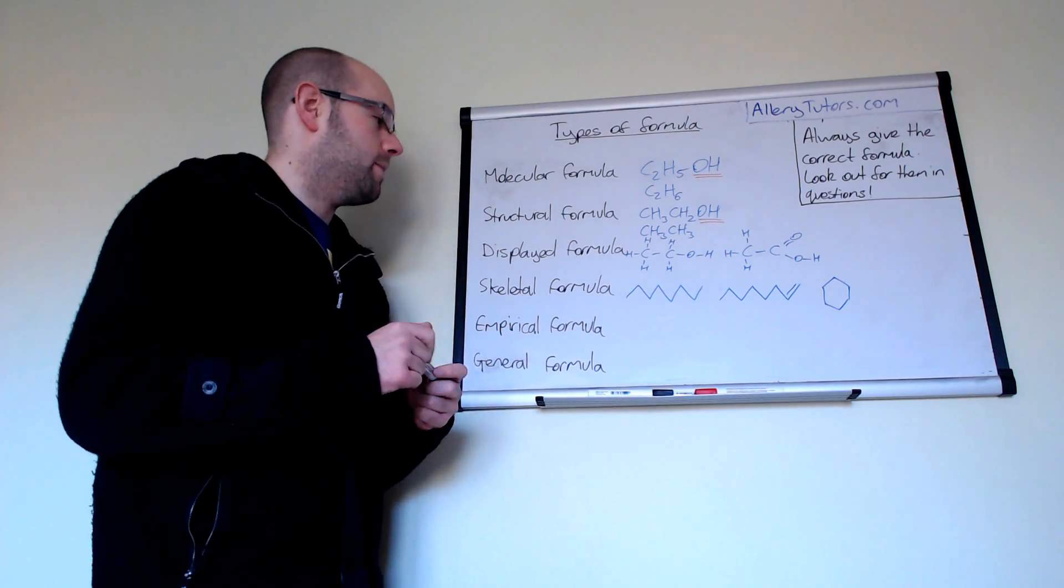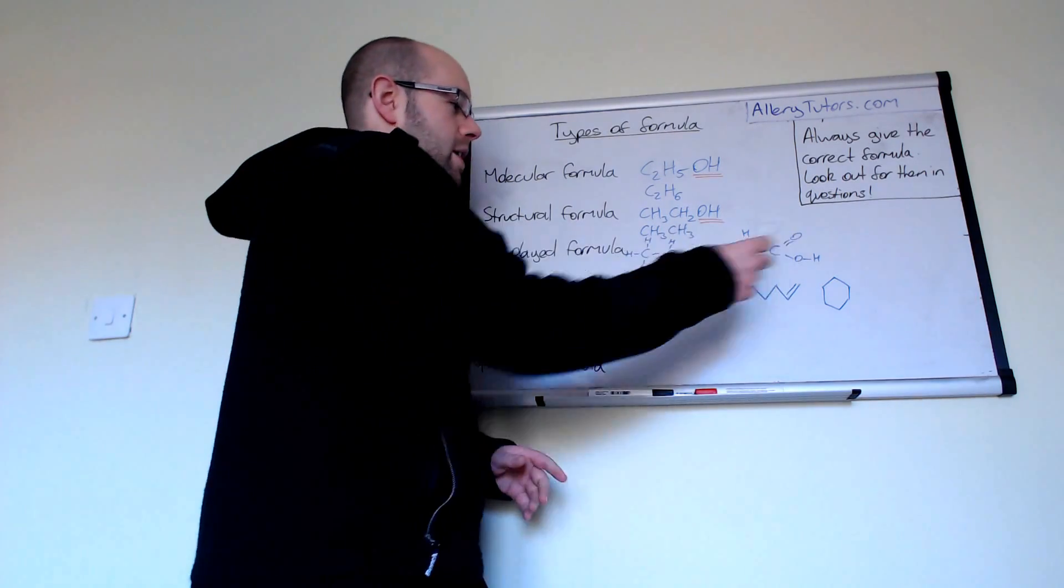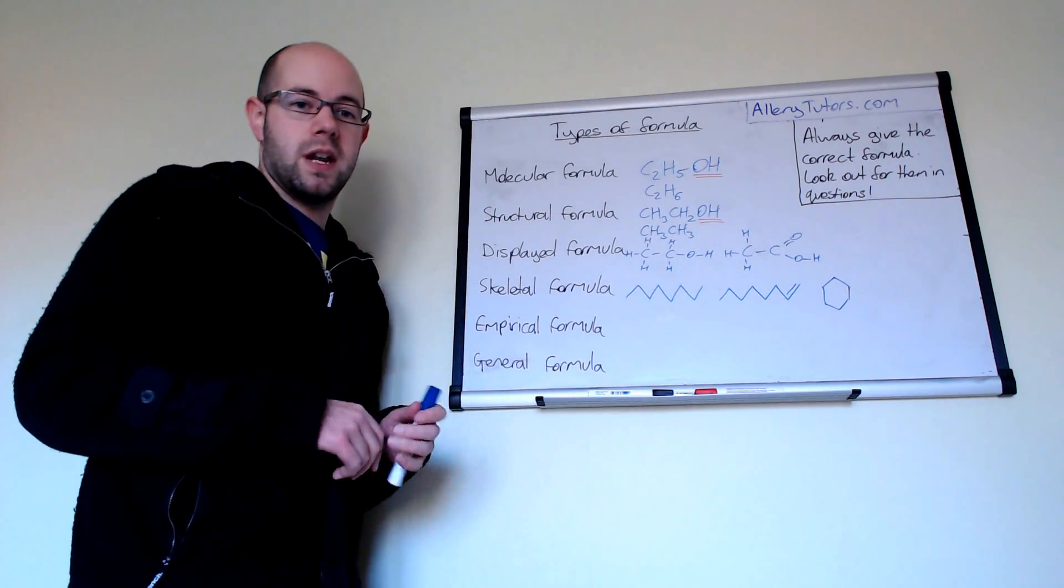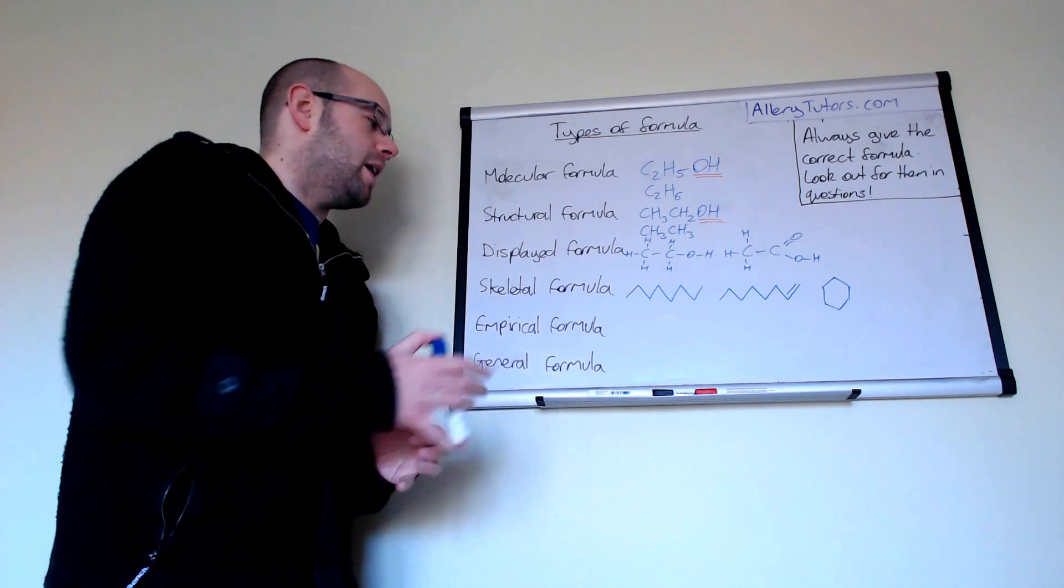You can see that we have six points on there so that is effectively six carbons in a cyclic ring and so that makes it a lot quicker and a lot easier to draw as well. You'll see this quite a lot particularly in A2.